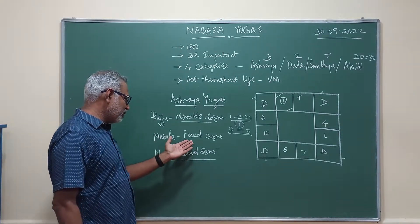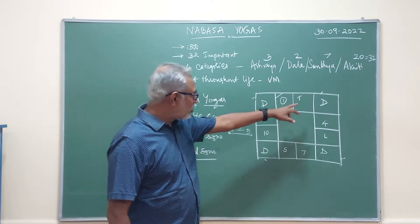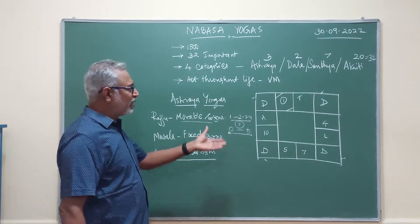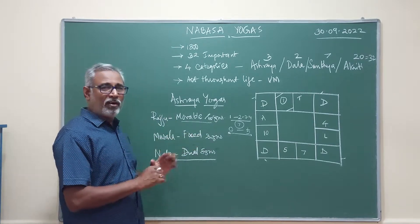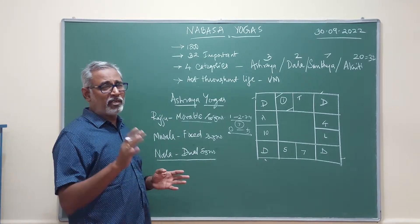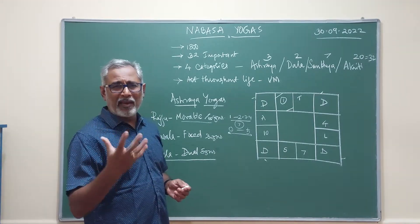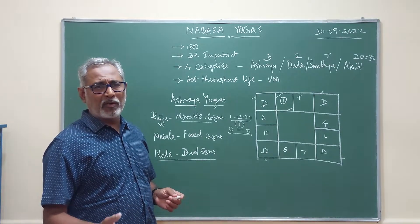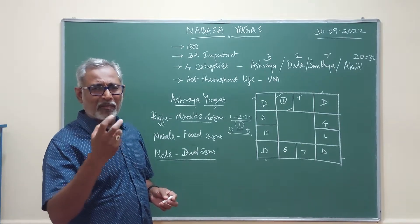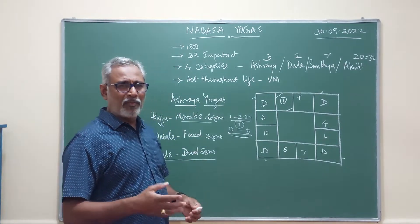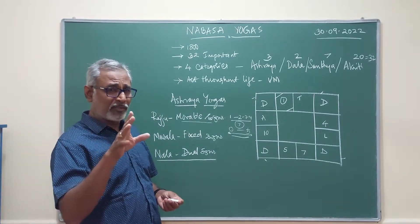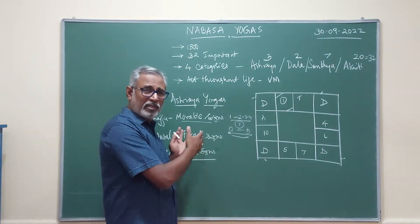Musala Yoga happens if all the planets are in the fixed signs — Taurus, Leo, Scorpio, and Aquarius. All the planets should be in these fixed signs only; if any planet is elsewhere, the yoga becomes partial, not total. When these texts say 'planets,' they clearly mean Sun to Saturn — Rahu and Ketu are not included — but let us include them and see how it works through research.